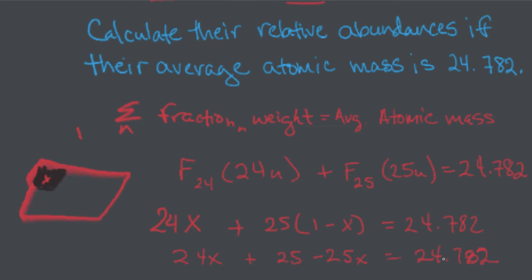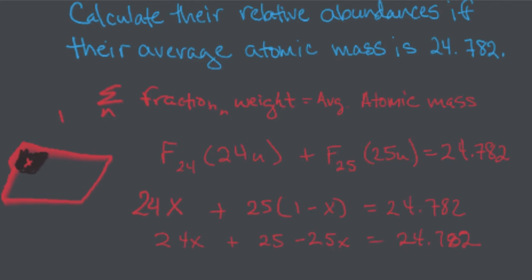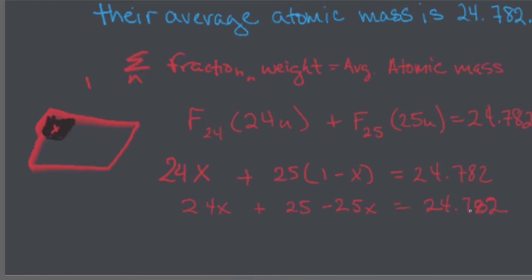So, then combine your like terms on the left side and bring over the 25 on this side. So, here we're going to have a negative x. And if I subtract that 25 right here on both sides, I'm going to calculate it. So, we got 24.782, so negative 2.218.